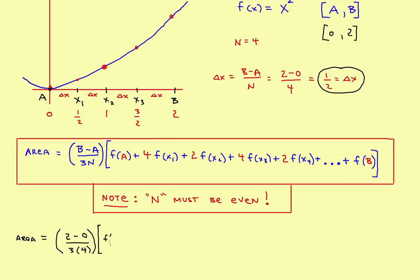f evaluated at 0, which is this one, so a = 0. Then plus - I'll put these in red so they stand out - don't forget, it's 4 times f evaluated at x₁, which is 1/2. So plug in 1/2.